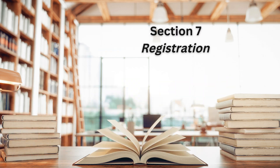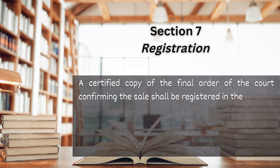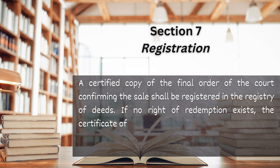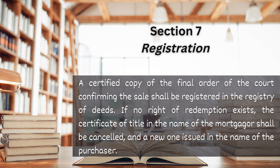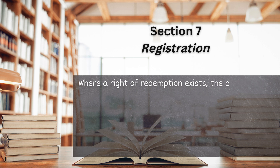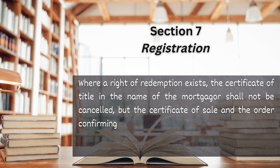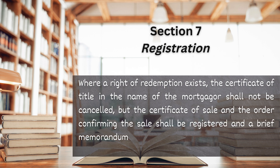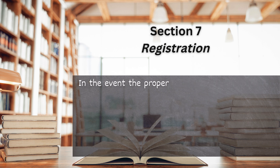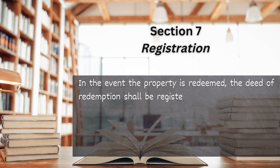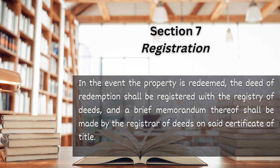Section 7. Registration. A certified copy of the final order of the court confirming the sale shall be registered in the registry of deeds. If no right of redemption exists, the certificate of title in the name of the mortgagor shall be cancelled, and a new one issued in the name of the purchaser. Where a right of redemption exists, the certificate of title in the name of the mortgagor shall not be cancelled, but the certificate of sale and the order confirming the sale shall be registered, and a brief memorandum thereof made by the registrar of deeds upon the certificate of title. In the event the property is redeemed, the deed of redemption shall be registered with the registry of deeds, and a brief memorandum thereof shall be made by the registrar of deeds on said certificate of title.